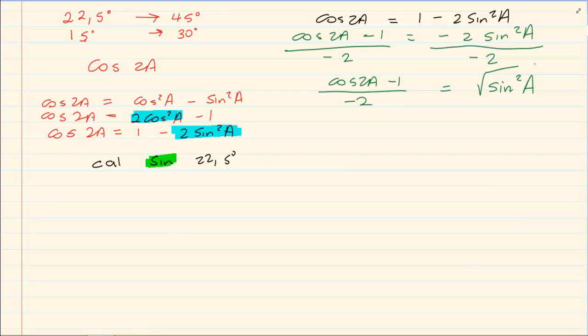Then I am going to square root it and you square root both sides. So we have sin a is equal to the root of cos 2a minus 1 over minus 2.